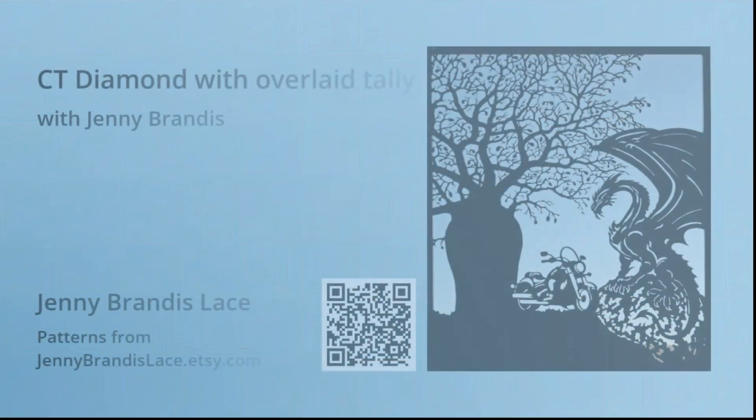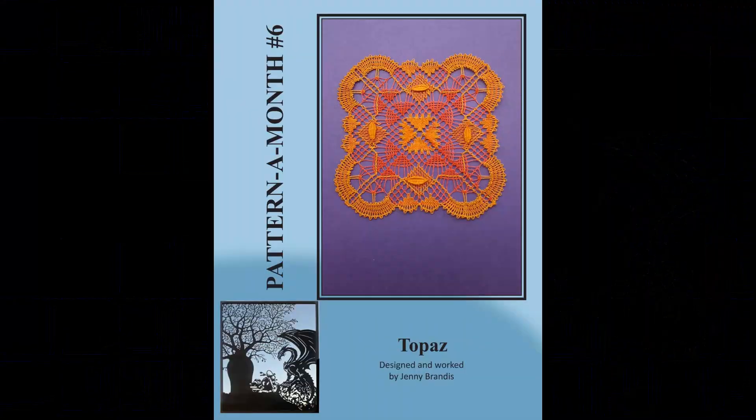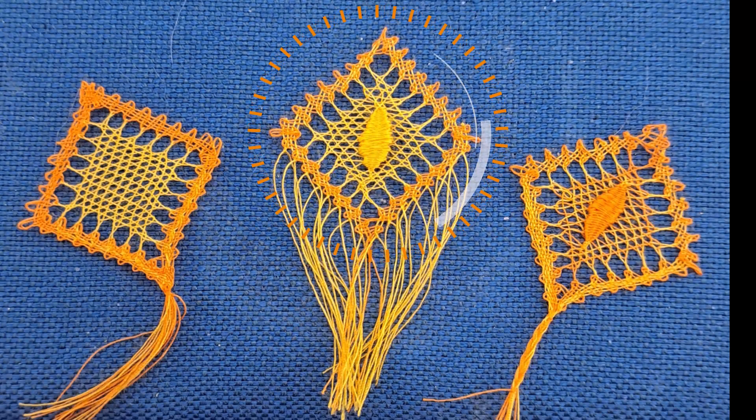G'day and welcome to the half stitch diamond and overlaid tally with Jenny Brandes, which is worked here in the topaz mat from pattern month number six. The 6x6 pin diamond has a Bedfordshire styled overlaid tally added to the half stitch diamond. This video shows how I work the central sample.